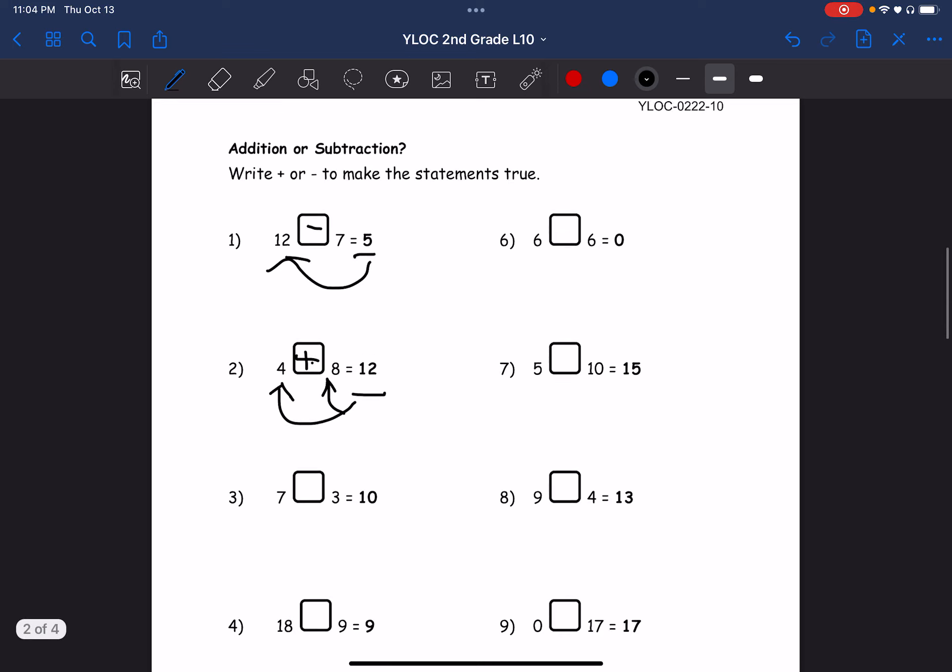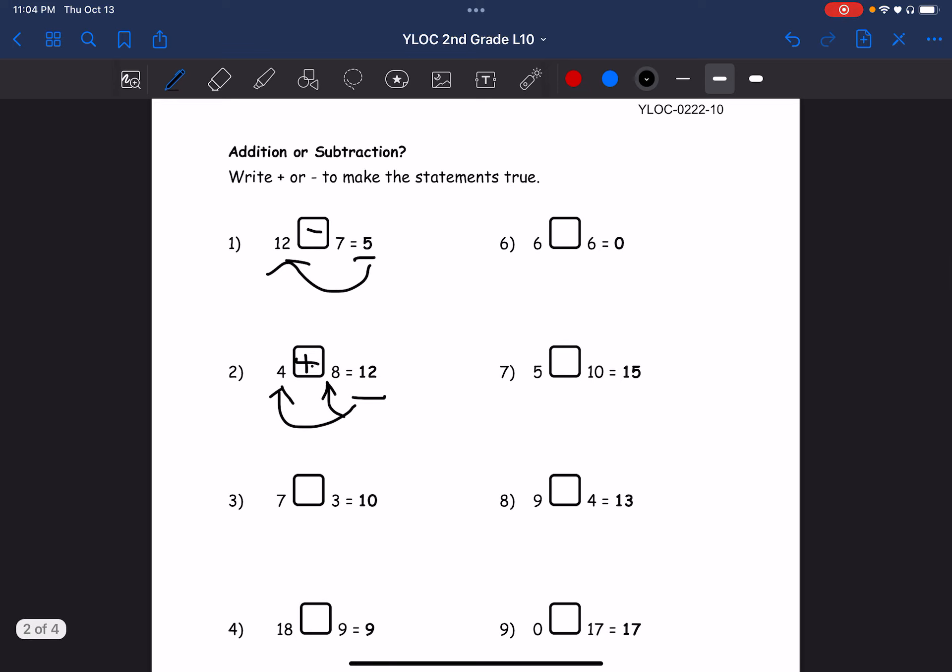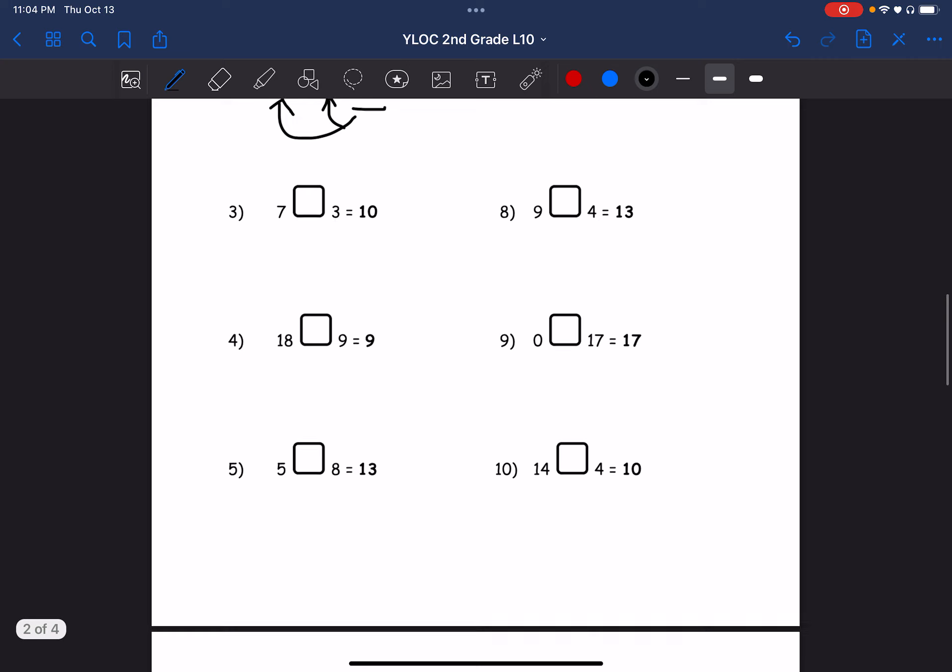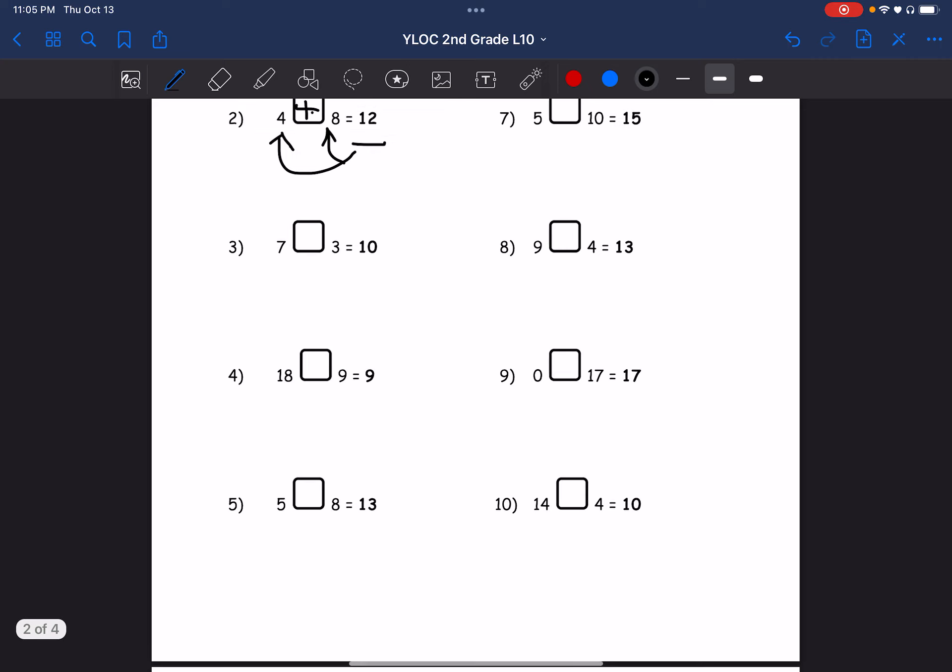Then we see 6, 6, and 0, so the numbers must cancel each other out in some way, and we can do that with subtraction, so that's minus. And then 9 blank 4 equals 13. 13 is greater than both 9 and 4, so that has to be addition. Alright, let's go to the next page.